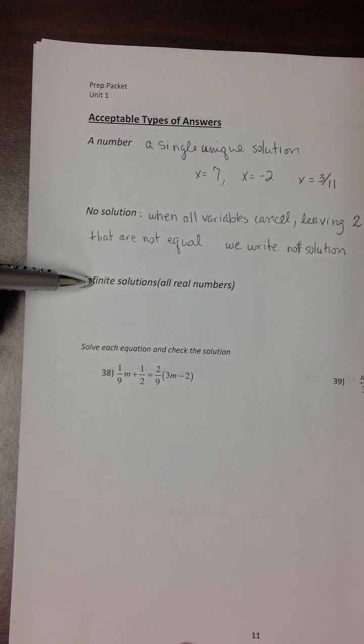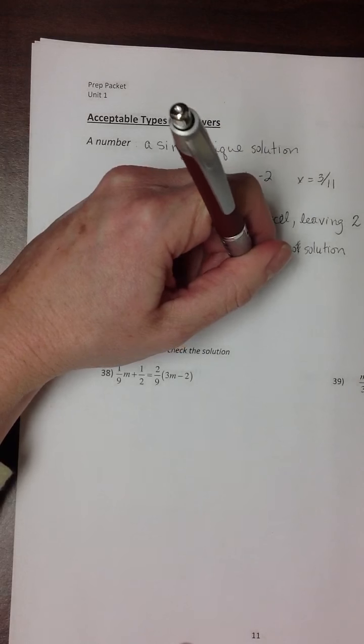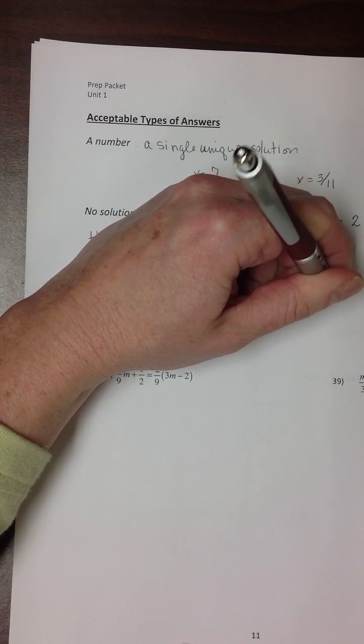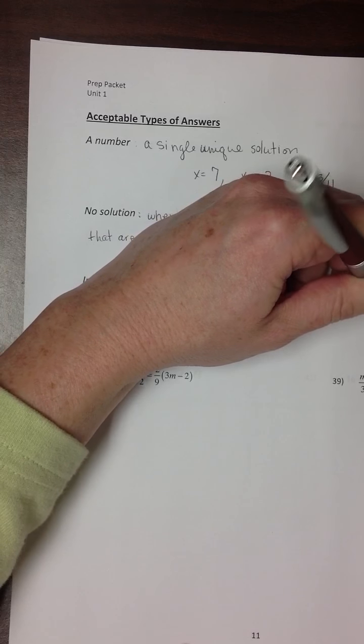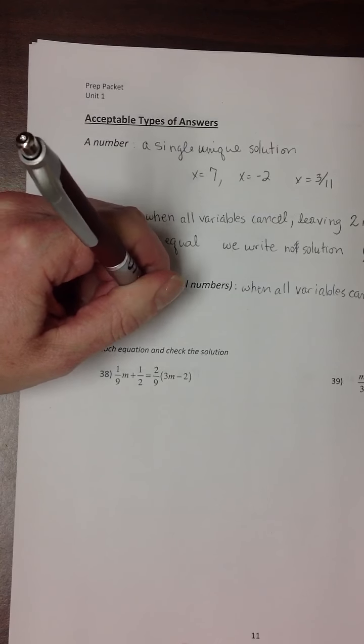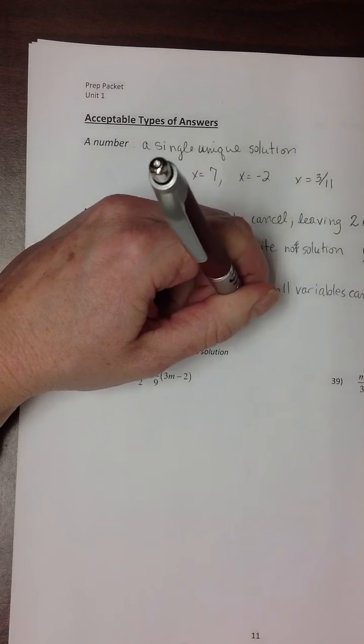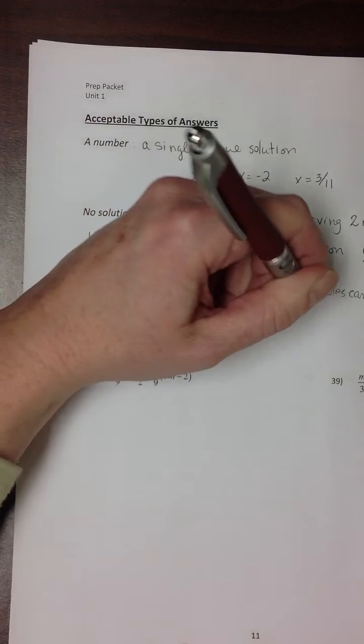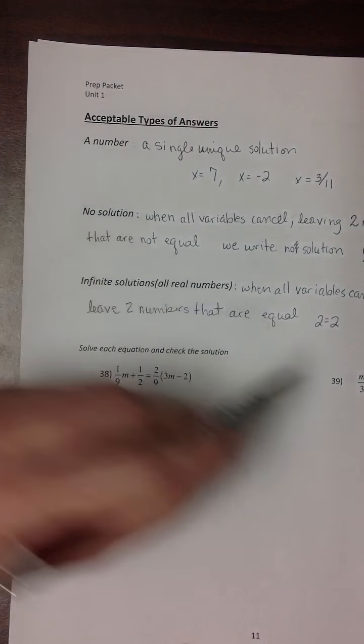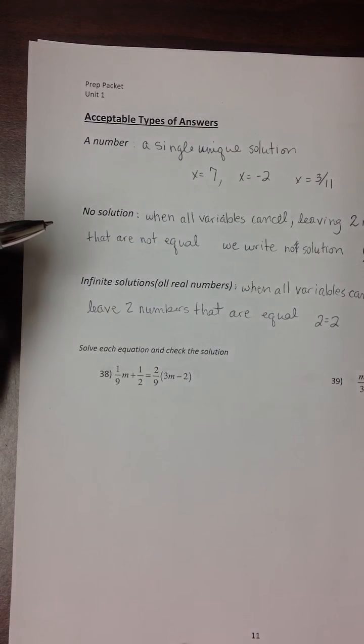The other special case is when we get an infinite number of solutions. In this case, all the variables cancel, but they leave two numbers that are equal. So when you get to the last part of your equation, you end up with something like 2 equals 2. That means no matter what you put in place of your variable, you'll always get an equation that is true.